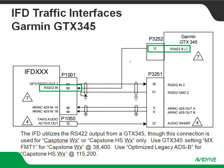The IFD is going to utilize that RS422 output from the GTX 345. That connection is going to be used for capstone weather or capstone high-speed weather only. If we're going to use that RS422 output, we're going to use the negative line, and we're going to feed that into an RS232 input on the IFD side. On the GTX 345, we're going to set up that RS422 output to either provide MX format one — which is straight capstone weather at 38,400 baud rate — or we're going to use optimized legacy ADS-B for capstone high-speed weather at a 115,200 baud rate.